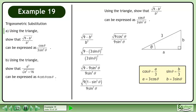1 minus sin²θ equals cosθ. Take the square root of the numerator. Reduce the coefficients to get the answer cosθ over 3 sin²θ.